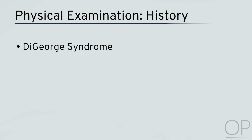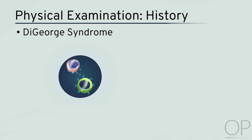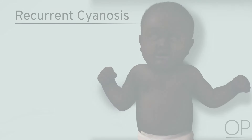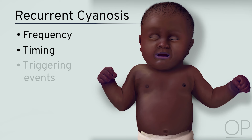For example, DiGeorge syndrome, frequently seen in patients with Tetralogy of Fallot, predisposes to immunodeficiency and hypocalcemia. In addition, potential episodes of recurrent cyanosis have to be thoroughly evaluated, especially frequency, timing, and triggering events like agitation.